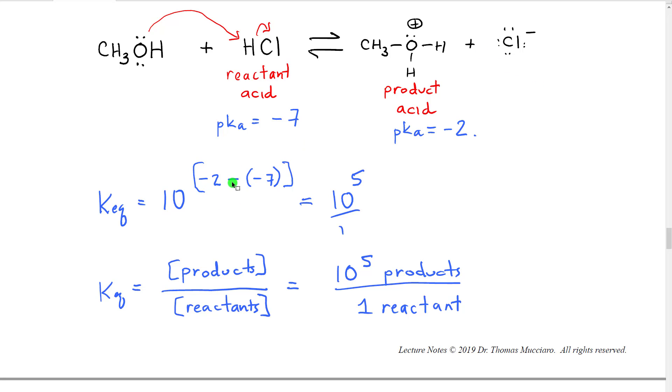Now, what if we ended up with a negative exponent? Well, then what we would do is we would just take that negative exponent number, 10 to the minus 7th, we would put 10 to the 7th underneath and 1 on top. So that would tell us that we would have 10 to the 7th reactants over one product. Essentially, we get almost no product formed.